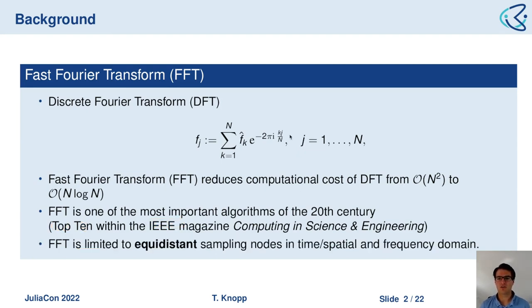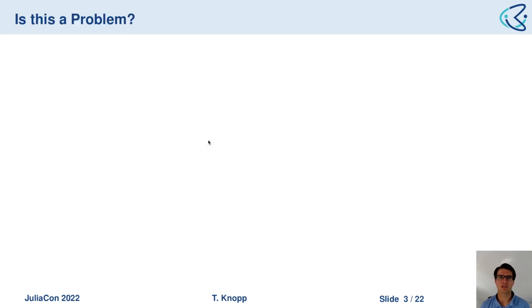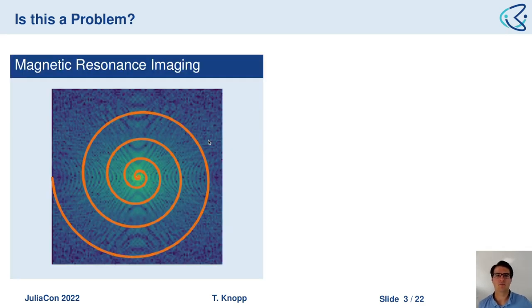However, there is one strict restriction: the FFT is restricted to equidistant sampling nodes. Both signals are sampled in an equidistant fashion. The question is whether this is actually a problem, and the answer is in most cases no — but there are applications where we really sample on non-equidistant sampling nodes. One example is magnetic resonance imaging.